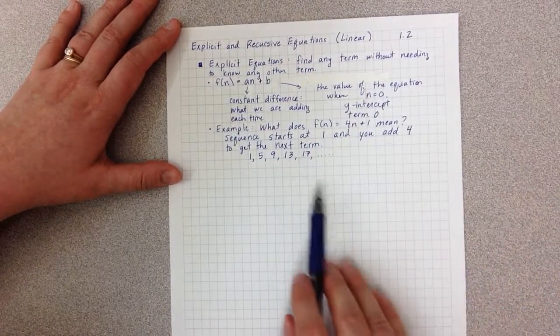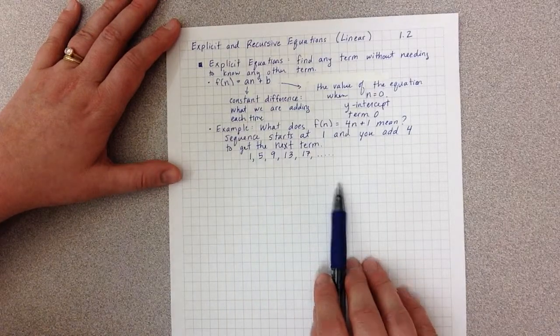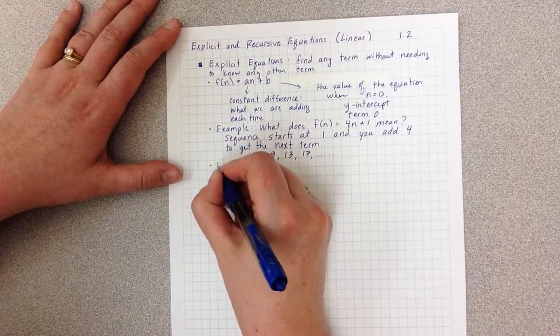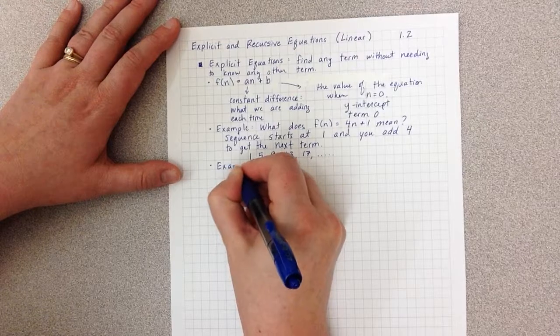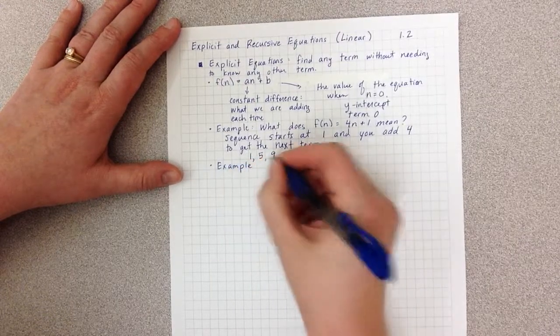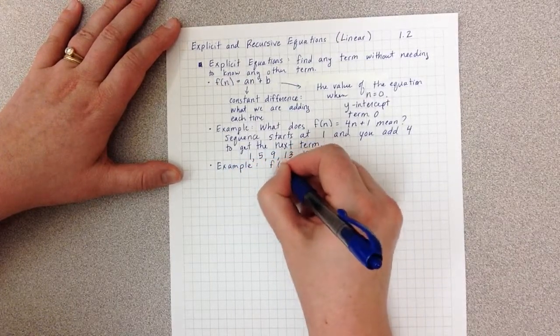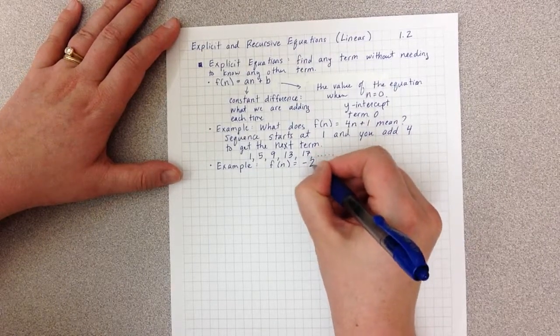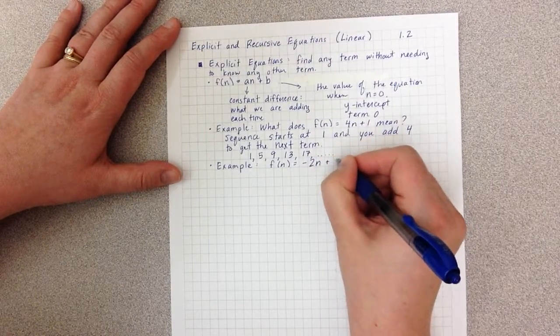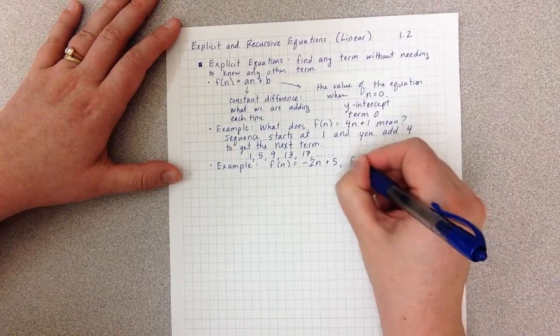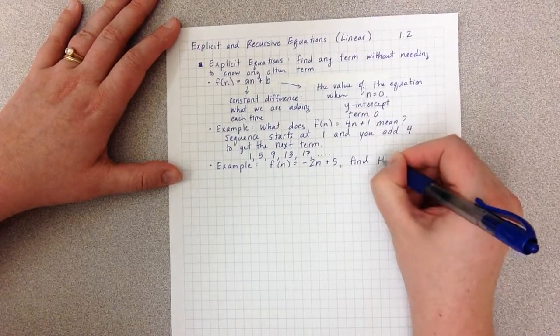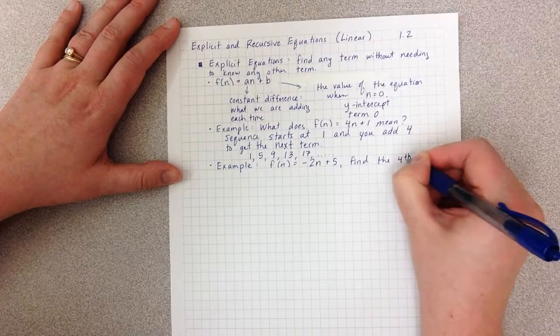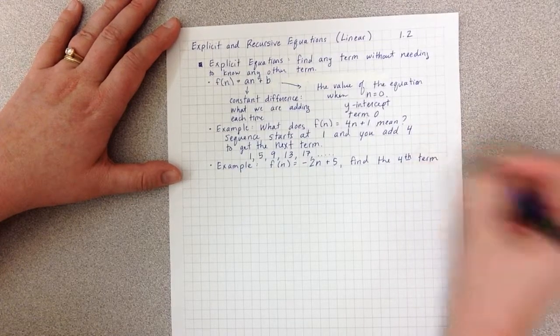Now, with this, however, I can also do a second example. f(n) equals negative 2n plus 5. Find the fourth term.